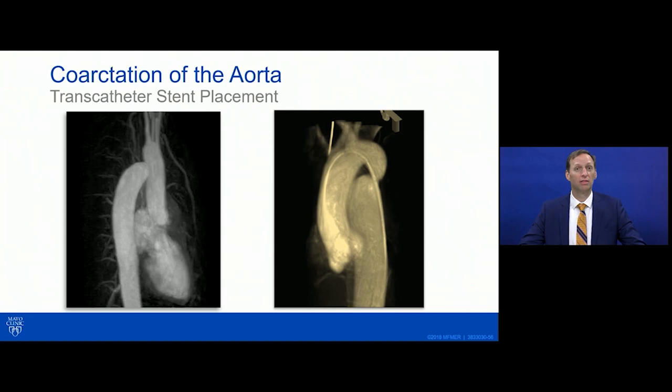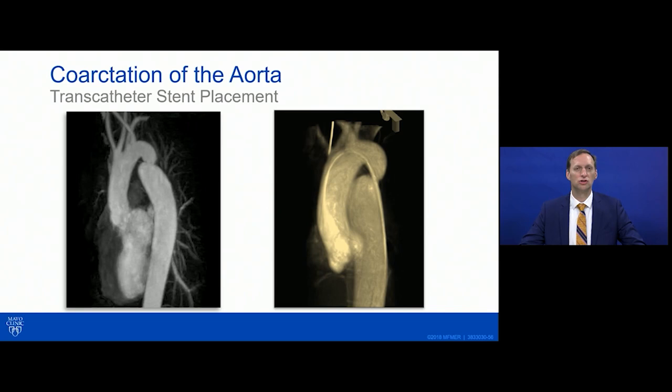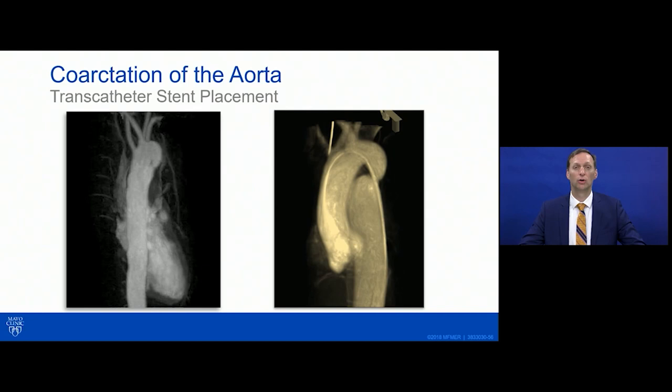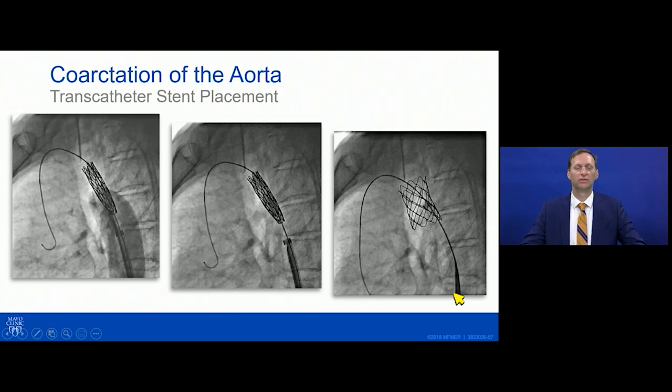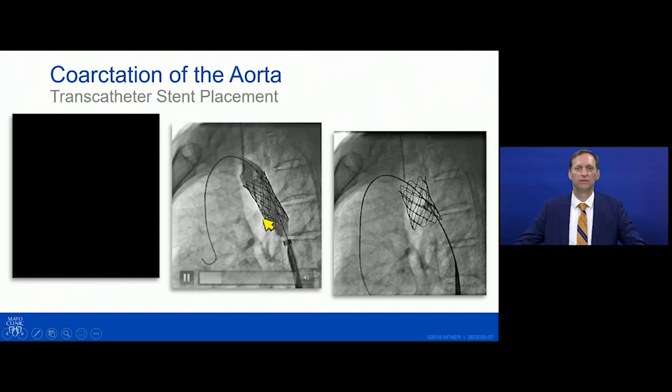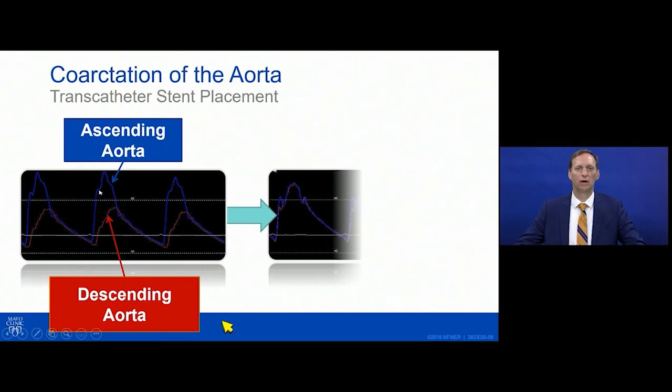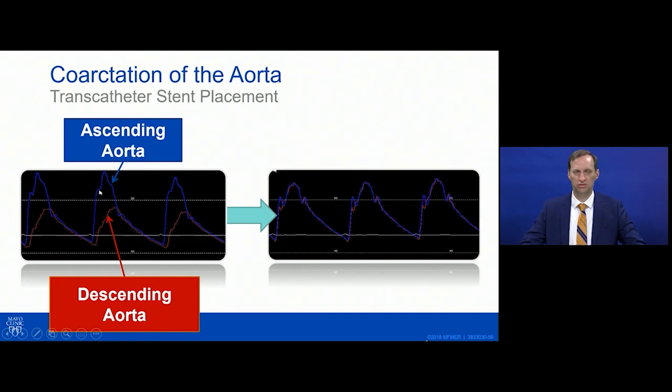In the cath lab: a 52-year-old female with an interesting head and neck branching pattern and a significant native coarctation. A 3D angiogram guided stent placement — a covered stent was deployed with rapid right ventricular pacing. The result was gratifying: a gradient of 40 mmHg became essentially zero after stent deployment, with angiogram showing wide-open flow through the previously coarcted segment.